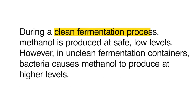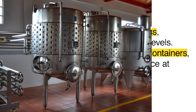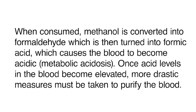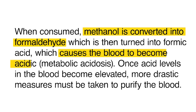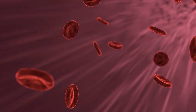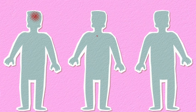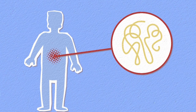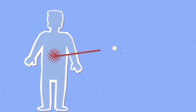During a clean fermentation process, methanol is produced at safe low levels. However, in unclean fermentation containers, bacteria causes methanol to be produced at higher levels. When consumed, methanol is converted into formaldehyde, which is then turned into formic acid, causing the blood to become acidic. Once acid levels in the blood become elevated, more drastic measures have to be taken to purify the blood. Symptoms usually don't occur until about 12 to 24 hours after consumption, and include abdominal pain, diarrhea, nausea, vomiting, dizziness, headache, or weakness of the body.